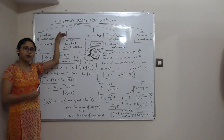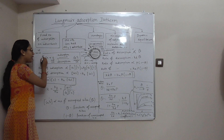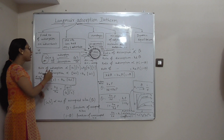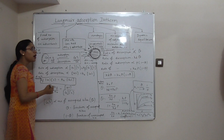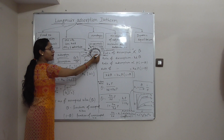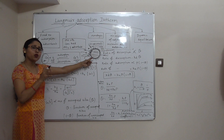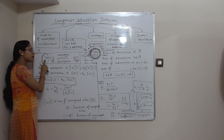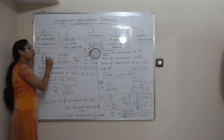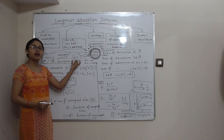Now let us see how the Langmuir adsorption isotherm works. Suppose we have a gas G here. That gas will adsorb on the surface of the adsorbent. This adsorbent surface has a fixed number of adsorption sites, and one site can accommodate only one adsorbate molecule. When gas G and the number of sites S combine, the reaction proceeds in the forward direction and a product GS is formed. That GS is called the adsorbed substance.